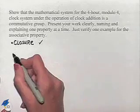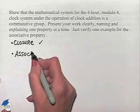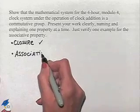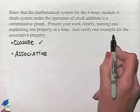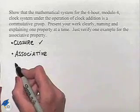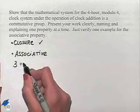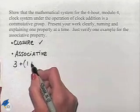Next, in order to be a group, we need to consider the associative property. We're told that we only want to verify one example for the associative property, so we're just going to pick some elements. For instance, we can take 3 plus 1 plus 2.